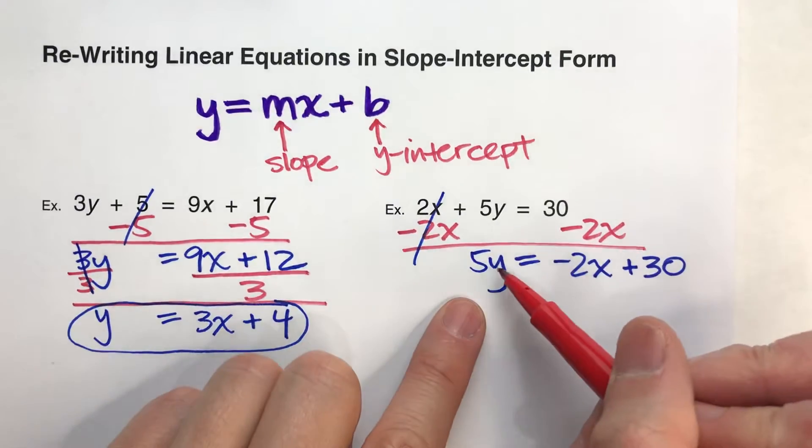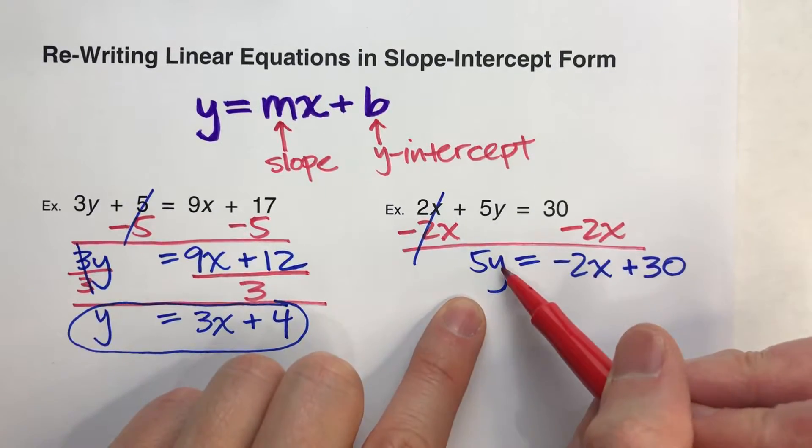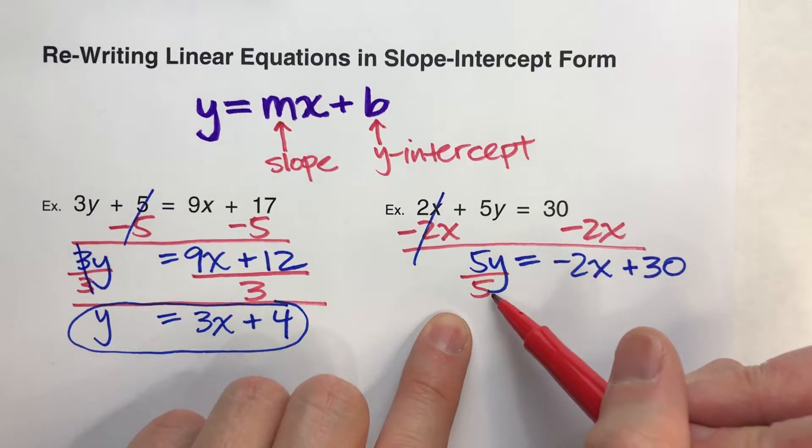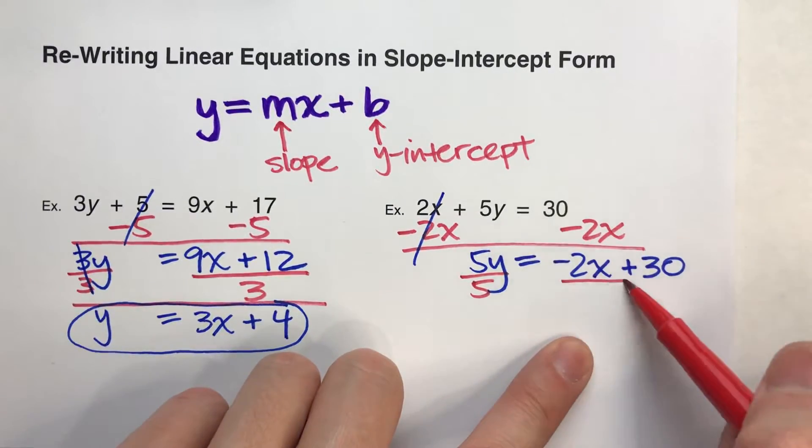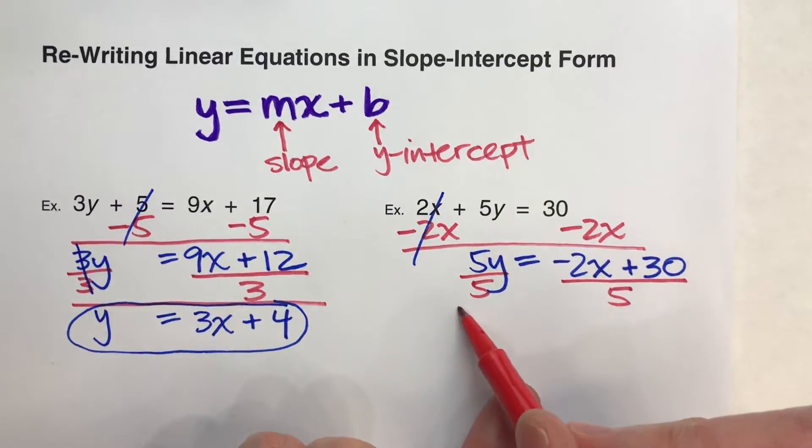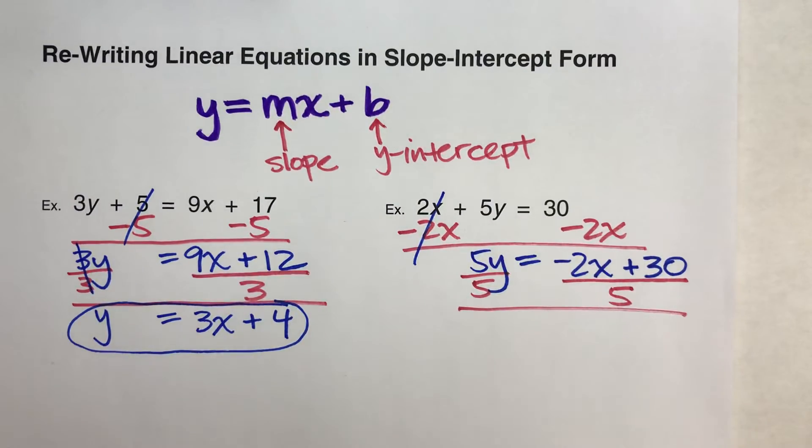Now, I still need to find y. And right now, it says 5 times y. So I'm going to divide by 5. What I do to one side, I have to do to the entire other side over here. Just like last time, I have to divide all of this by 5.